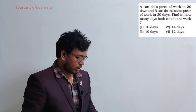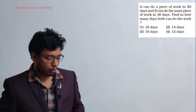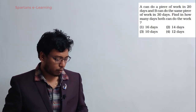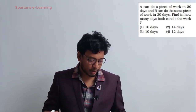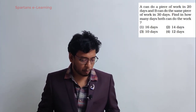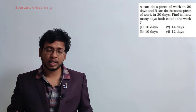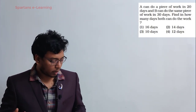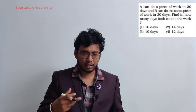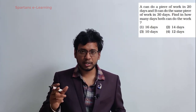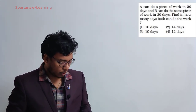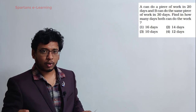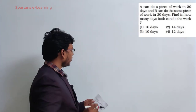Our first question says: A can do a piece of work in 20 days, B can do the same work in 30 days. Find in how many days both can do the work together. With 20 and 30, I'll take LCM as 60. Efficiency of A is 3, B is 2, combined is 5. So 60 by 5 is 12 — your answer will be 12 days.